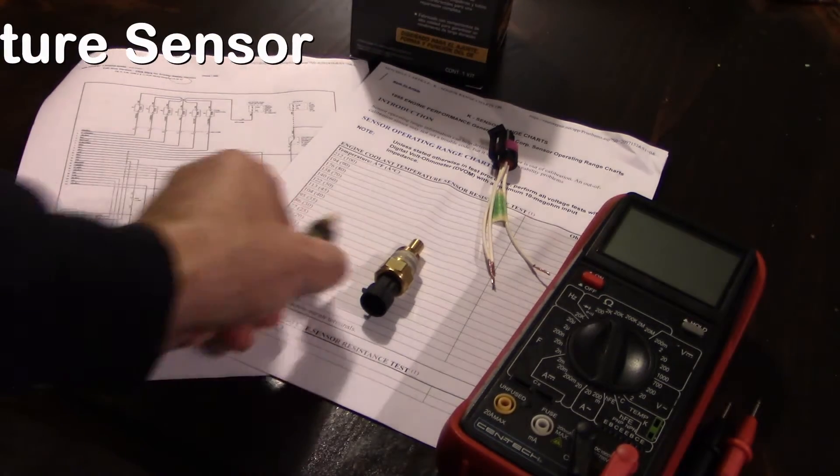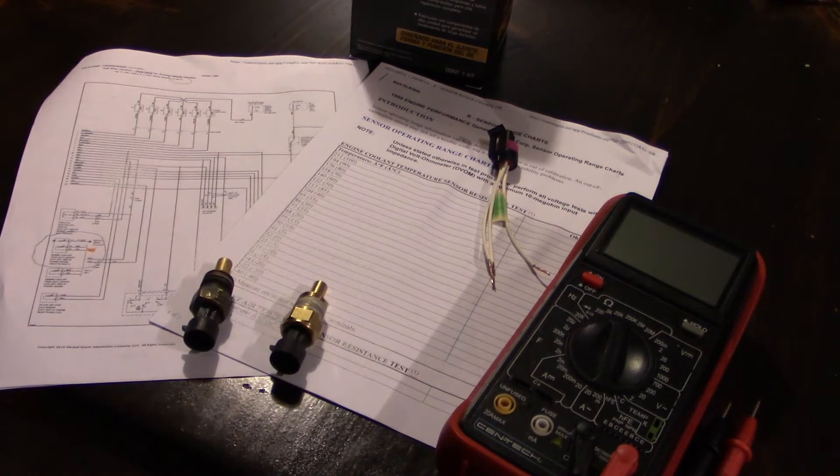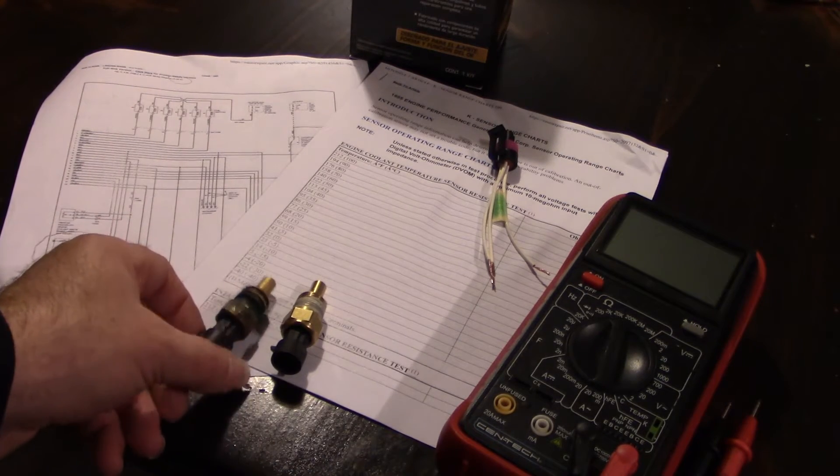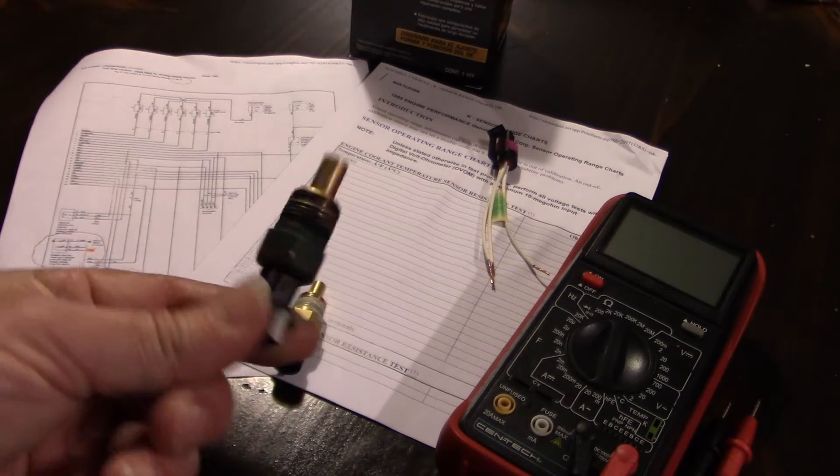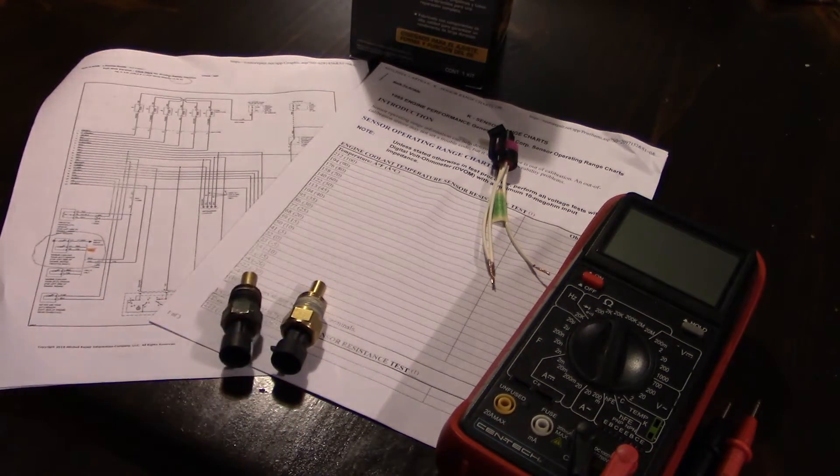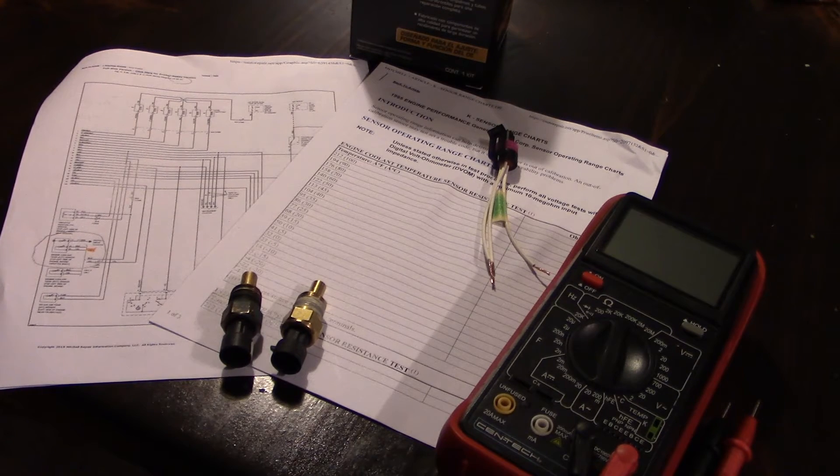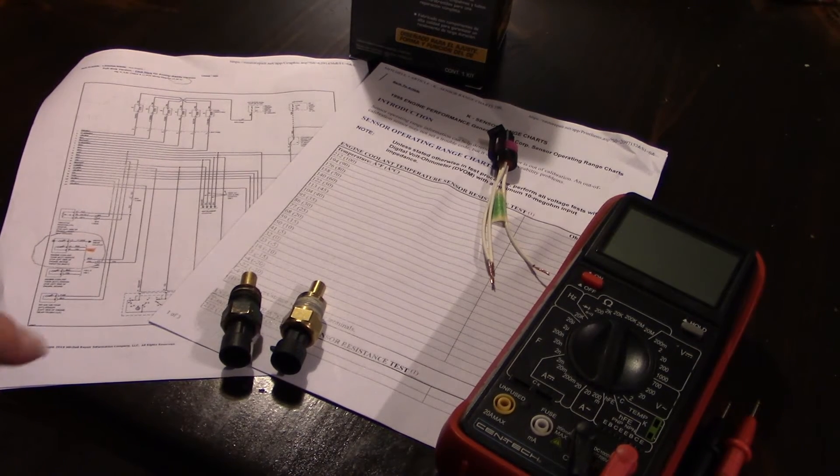I got an old one and I got a new one. We're going to compare them, contrast them, and test both of them. Now this one comes out of my 1995 Oldsmobile 98 Regency Elite. I was suspecting perhaps the coolant temperature sensor was bad and here's the replacement.